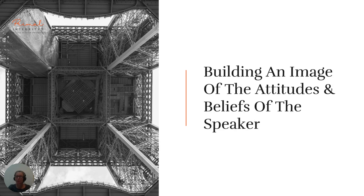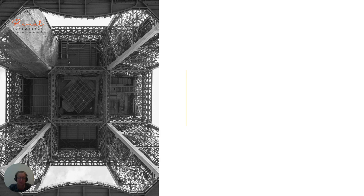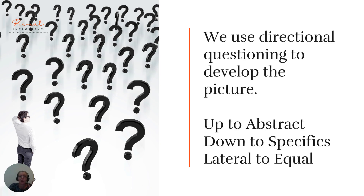This is a wonderful thing because it helps us to be less judgmental. What we're really doing here is building an image or representation of the attitudes and beliefs of the speaker — we are literally mapping the constructs of their mind. When we've identified assumptions, we use directional questioning to gain clarity: we want to develop the picture. We move upwards to the abstract or big picture, downwards to the specifics or details, and sideways to the equal.